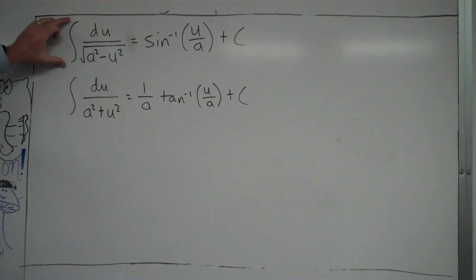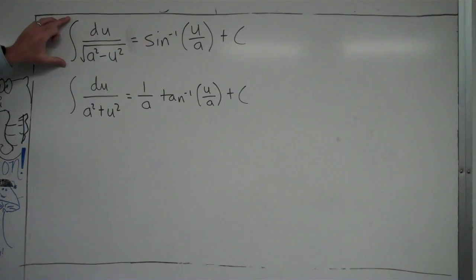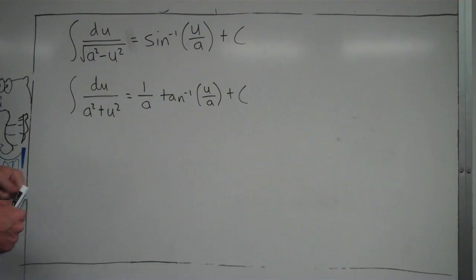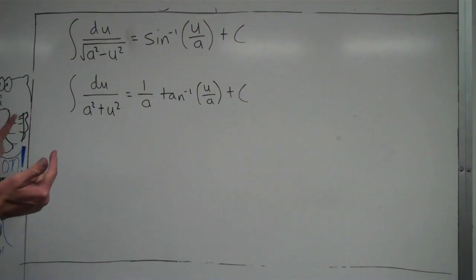If you see something in this form, then the anti-derivative is sin⁻¹(u/a) + C. I know that looks kind of crazy, but the way you can prove that it works: